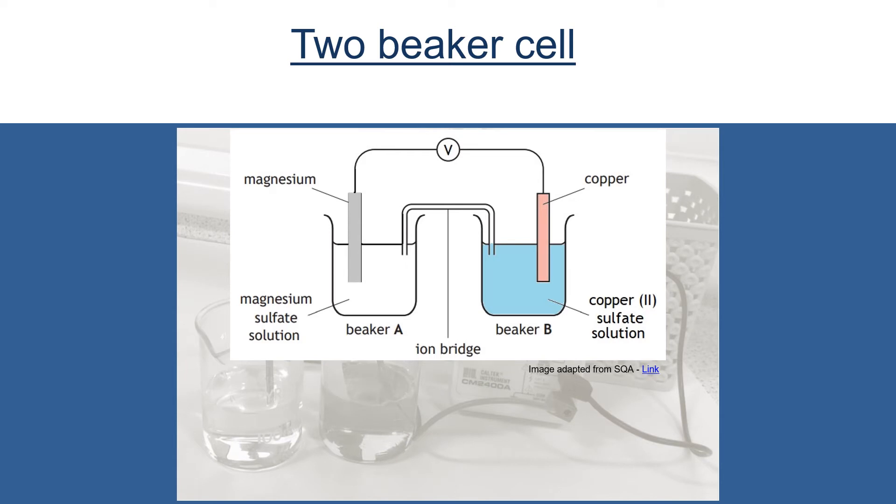In our two beaker cell we have two different metals sitting in solutions of their own metal ions. In this particular one, magnesium is our more reactive metal and it will give electrons away as shown by the arrow.